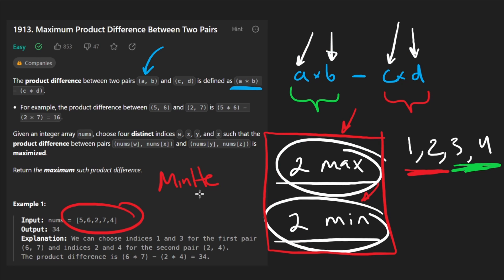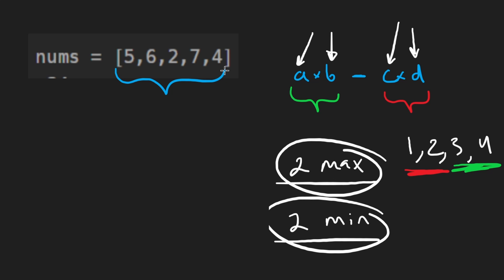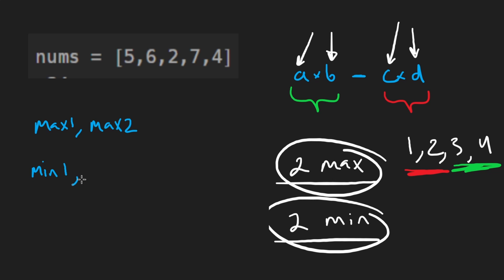The efficient solution is finding the two max and two min elements by iterating once. We're going to keep track of the max element — I'll call that max1 — and the second largest element, max2. We're going to do the same thing with the minimum elements: the smallest is min1 and the second smallest is min2. We'll keep track of these in variables.